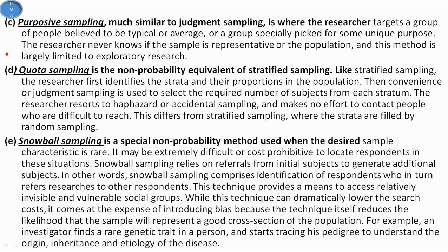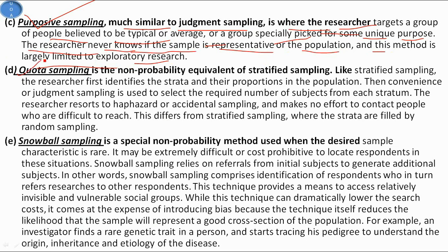Purposive sampling is much similar to judgment sampling, but the researcher targets a group of people believed to be typical or average, or a group especially picked for some unique purpose. The researcher never knows if the sample is representative of the population, and this method is largely limited to exploratory research.